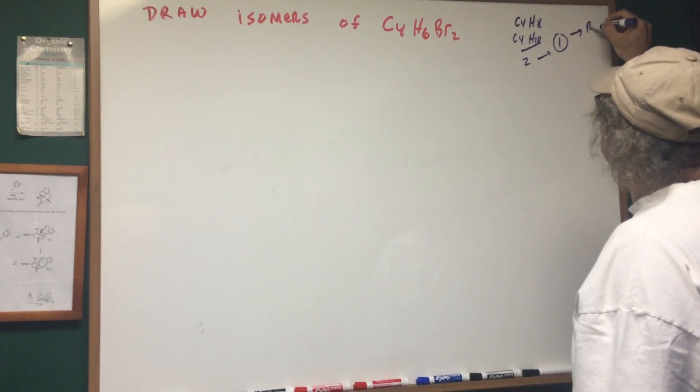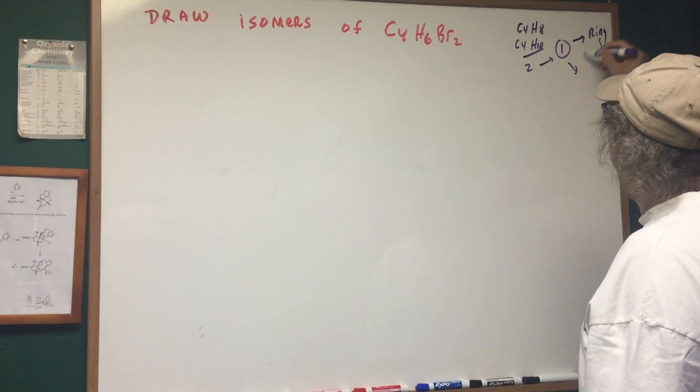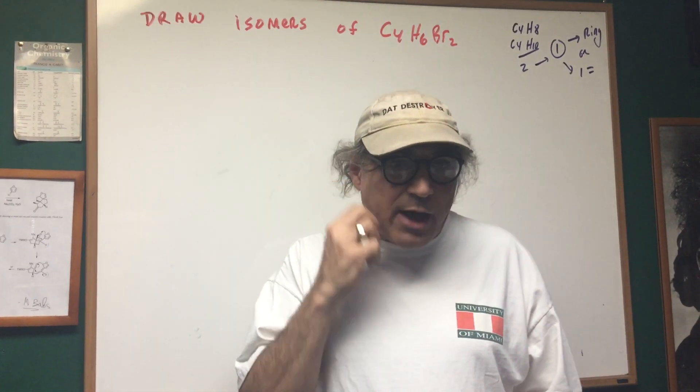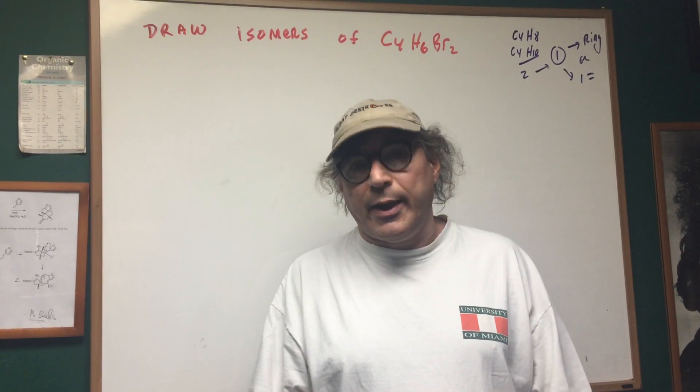One degree means there's gonna be one ring or one double bond. Now I showed how to do this in a previous calculation so I want you to make sure you know how to do that.